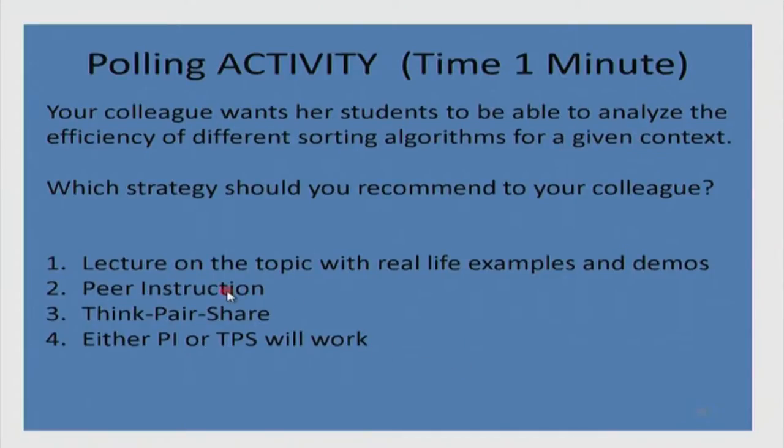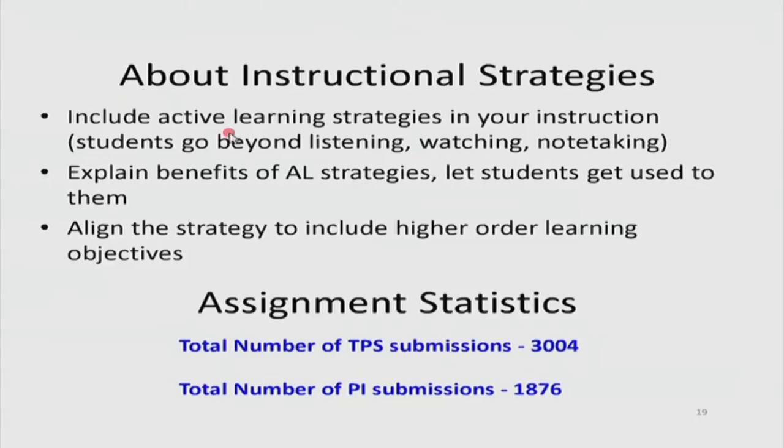For peer instruction on sorting algorithms, you can give choices as to which algorithm performs better, then in the discussion phase bring out the pros and cons of various algorithms. In terms of writing questions, total submissions for TPS assignments was 3,000 and close to 2,000 for PI submissions. These are being collated and organized into the wiki as a community resource — a large question bank you can use in your own instruction.